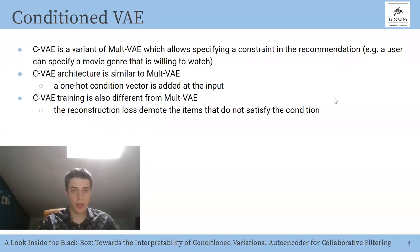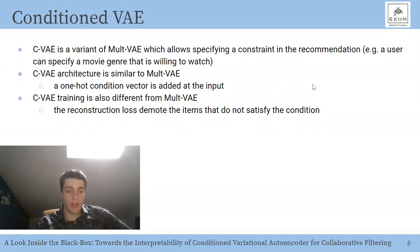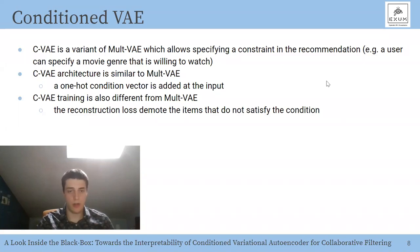The conditional variational autoencoder is a variant of the multinomial variational autoencoder, which is the state-of-the-art variational decoder used in the top-N item recommendation task. The key contribution of the multinomial VAE is its reconstruction loss — a multinomial loss — which allows the model to include in the gradient computation only those items the user has clicked on, enabling it to learn to generate a ranking over items the user has not interacted with. The main difference with the conditional VAE is that it allows specifying a constraint in the recommendation, such as a movie genre the user wants to watch, achieved by adding a one-hot condition vector to the input.